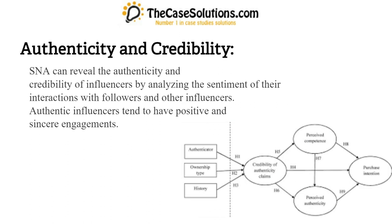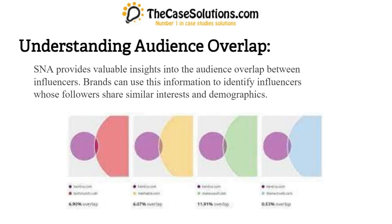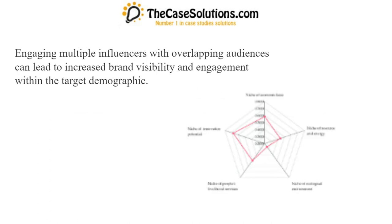Authenticity and credibility: SNA can reveal the authenticity and credibility of influencers by analyzing the sentiment of their interactions with followers and other influencers. Authentic influencers tend to have positive and sincere engagements. Understanding audience overlap: SNA provides valuable insights into the audience overlap between influencers. Brands can use this information to identify influencers whose followers share similar interests and demographics, leading to increased brand visibility and engagement.